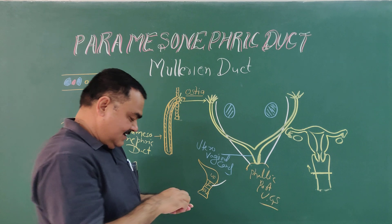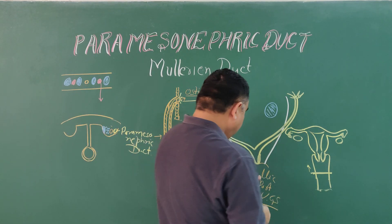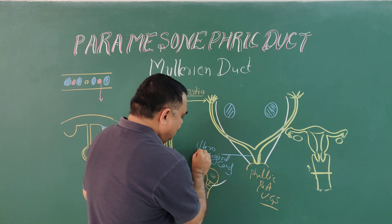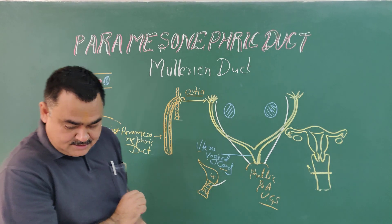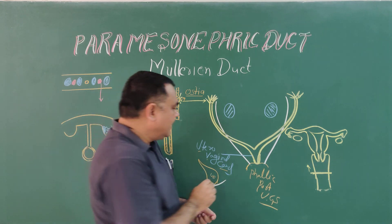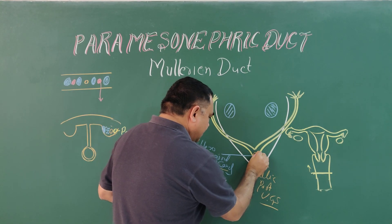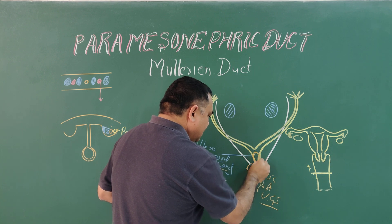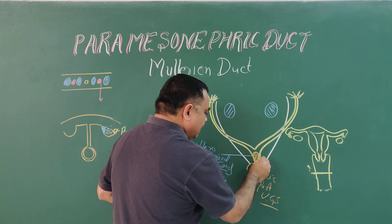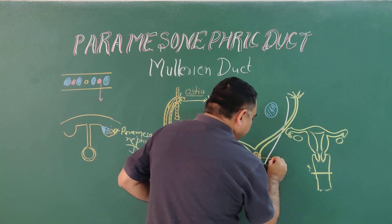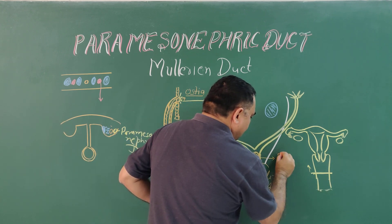In the male, this utero-vaginal canal forms the prostatic utricle, also called uterus masculinus.